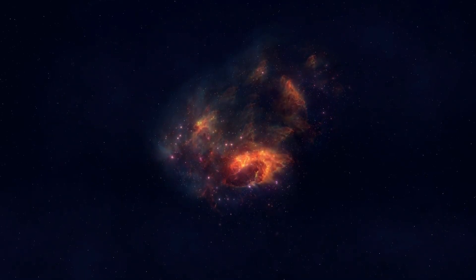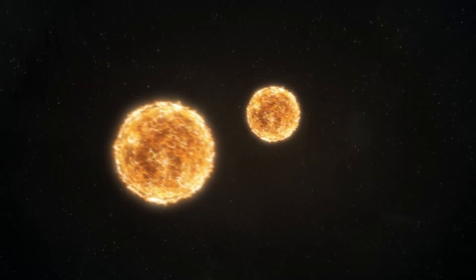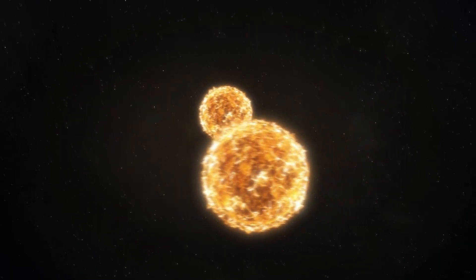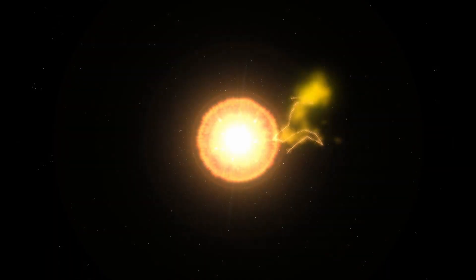Stars like Betelgeuse are the forges where the elements of life are created. When it finally goes supernova, it will scatter those building blocks into space, potentially laying the foundation for new stars and planets.